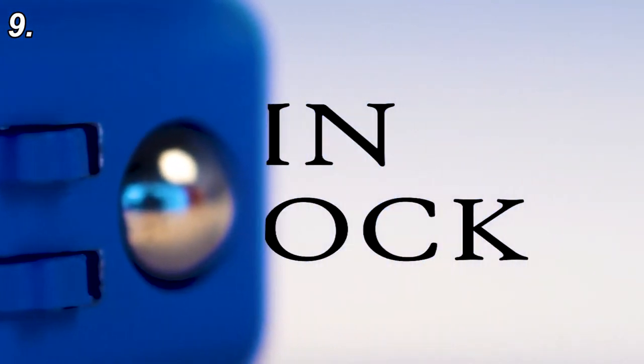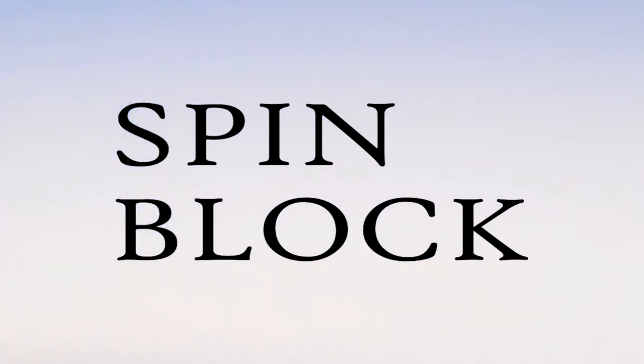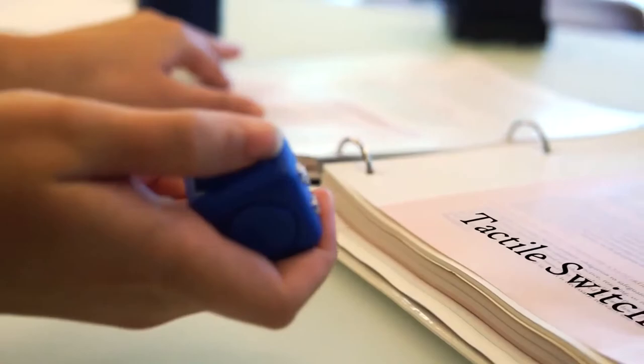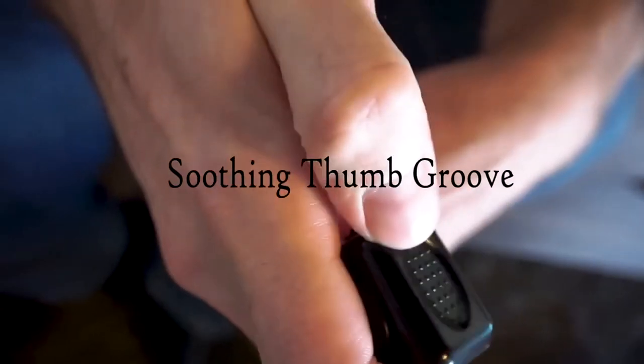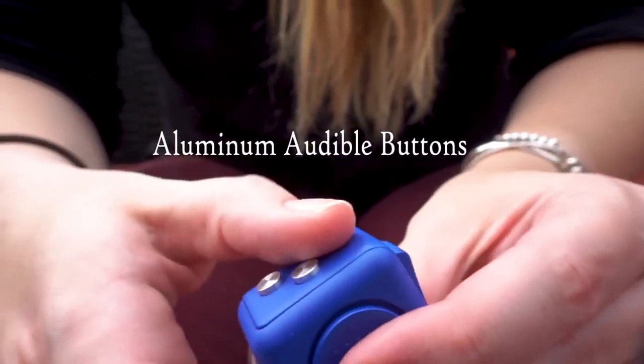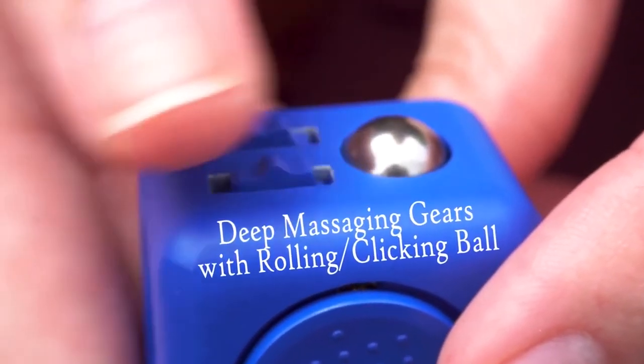If you prefer something more compact, Spin Block may be the only fidget toy you ever need. With up to seven different fidget elements to please your itchy fingers, you only need one hand to operate it. Giving it that satisfying spinning, clicking, pressing and rolling feel as you interact with it. Due to its aluminum profile material, it is safe to say that the Spin Block is durable and rust resistant.